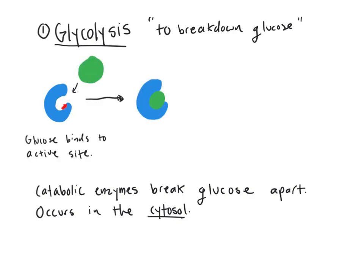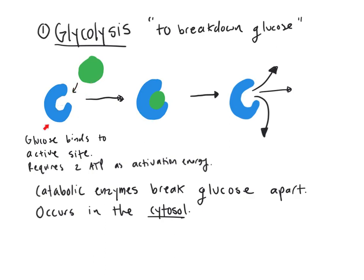Glucose is the substrate that binds to the active site of the enzyme. What comes out is the product — and because this is a catabolic reaction, some energy and electrons are released whenever you break bonds. In order for glucose to bind to this enzyme, it requires two ATP as activation energy. Enzymes speed up chemical reactions by lowering the activation energy, which is why it only requires two ATP. Without enzymes, the activation energy would be so much higher and we wouldn't be able to break down glucose.